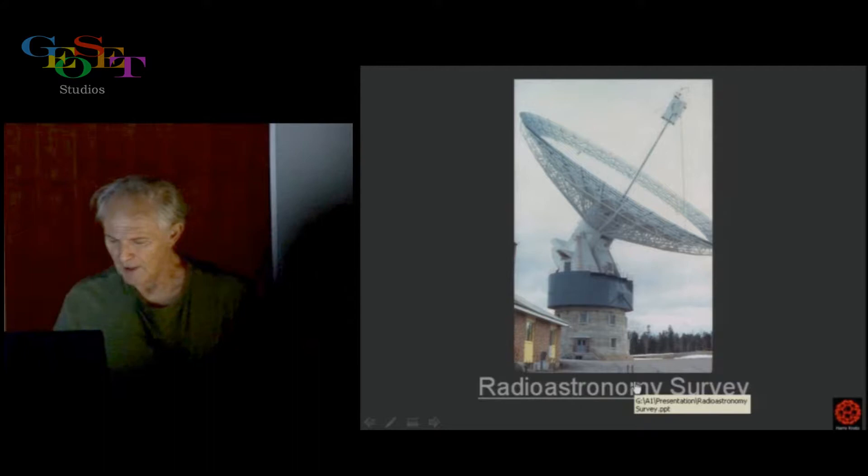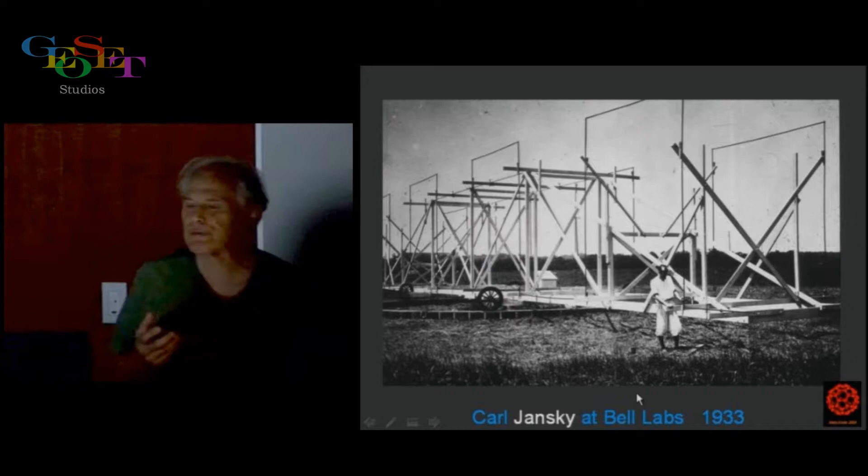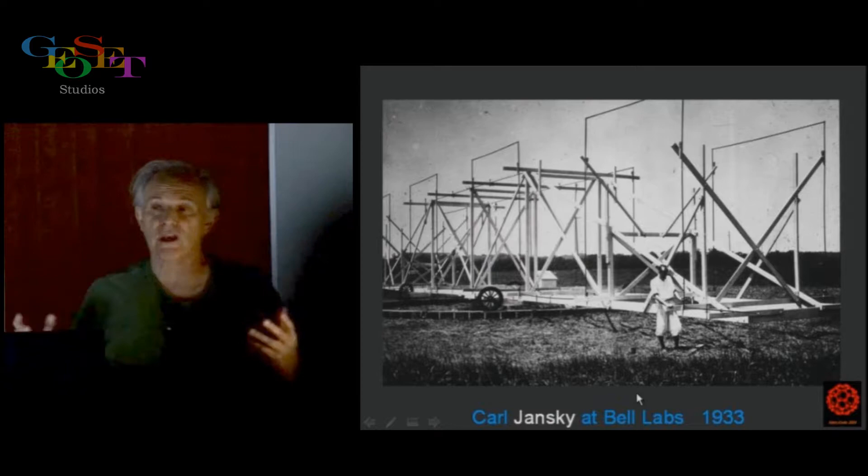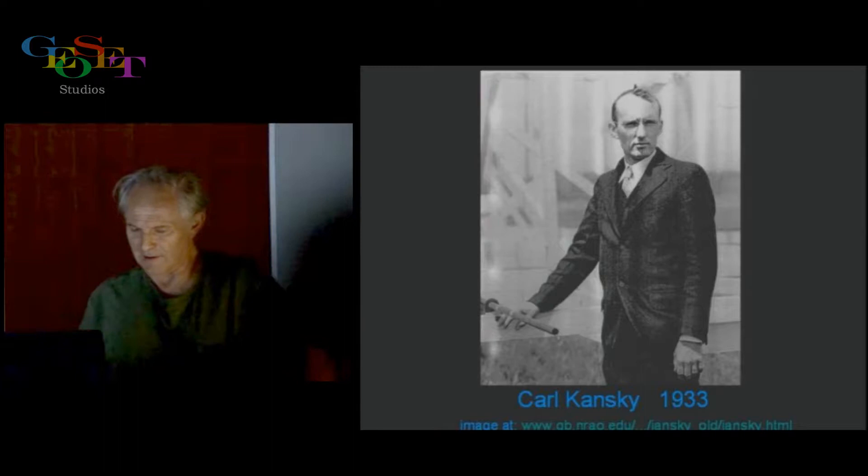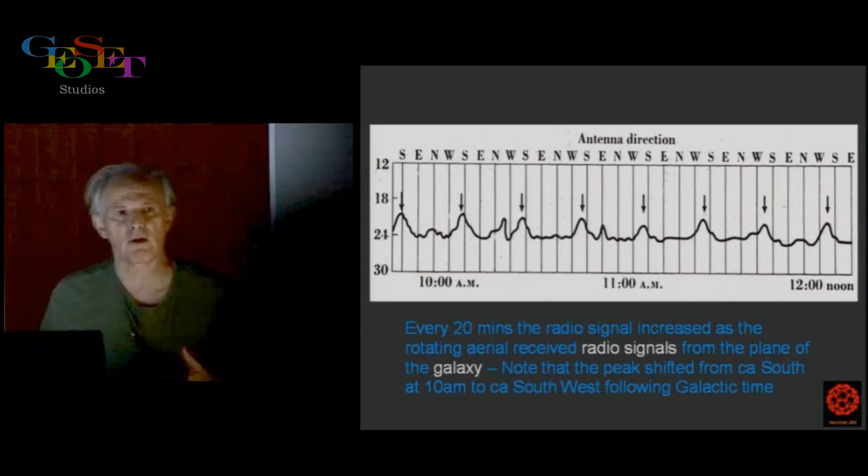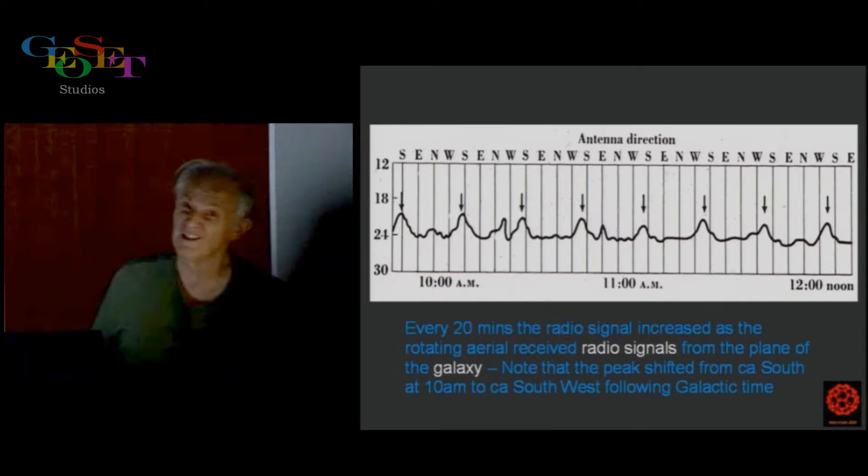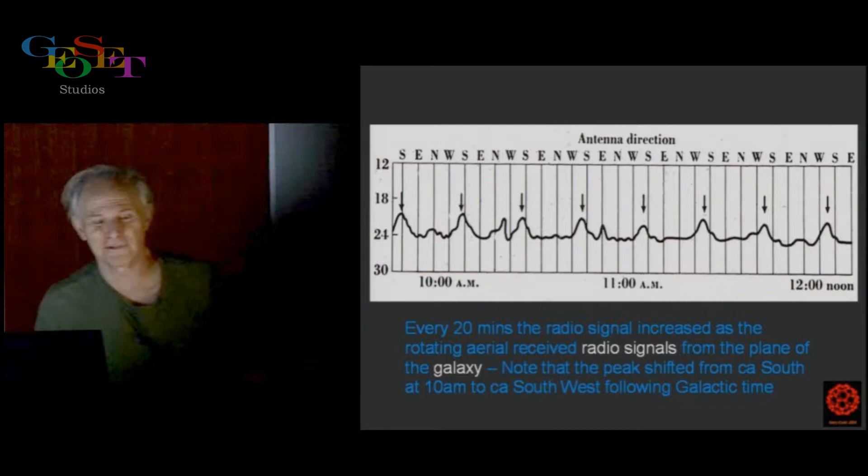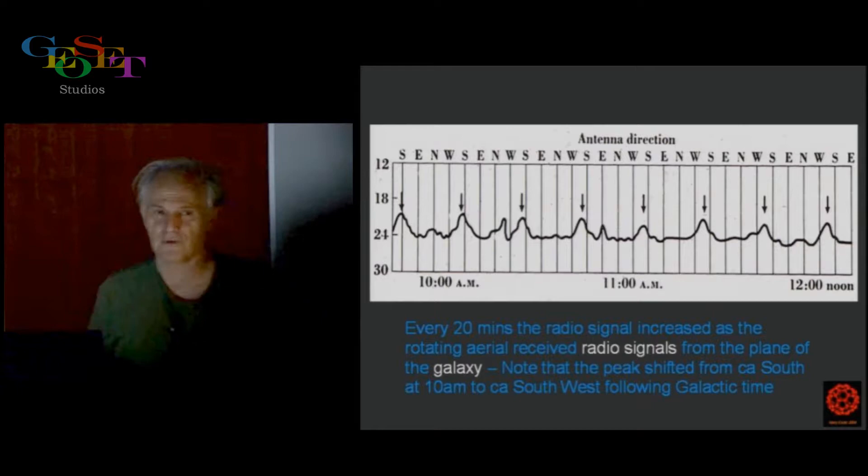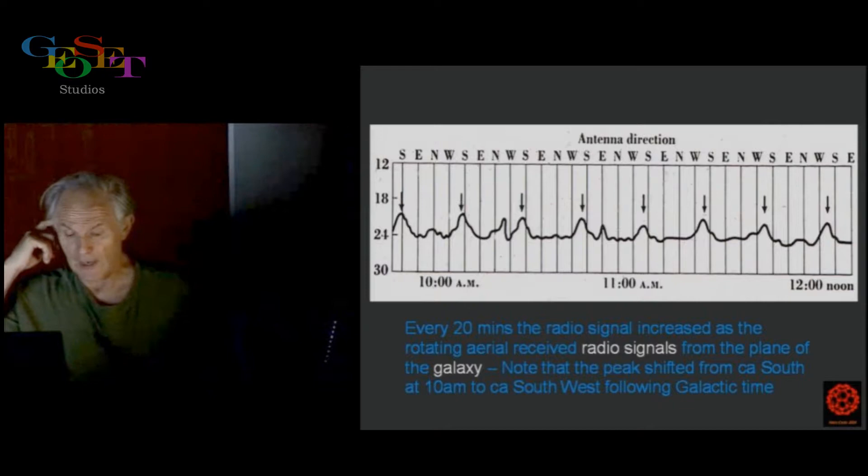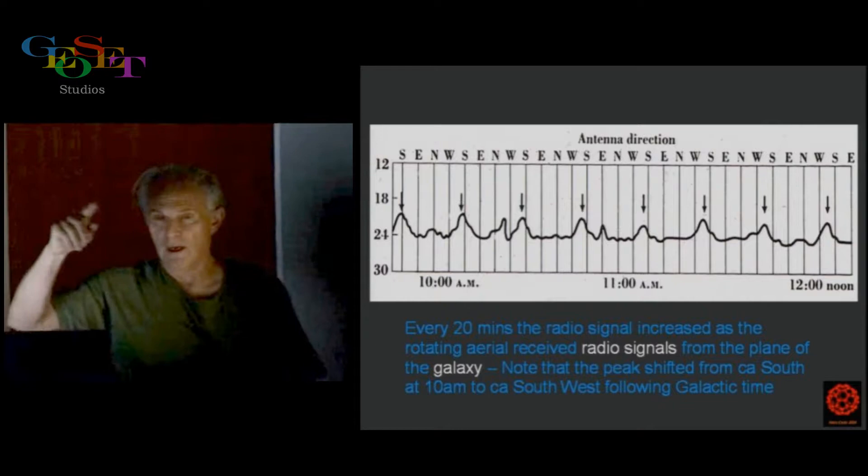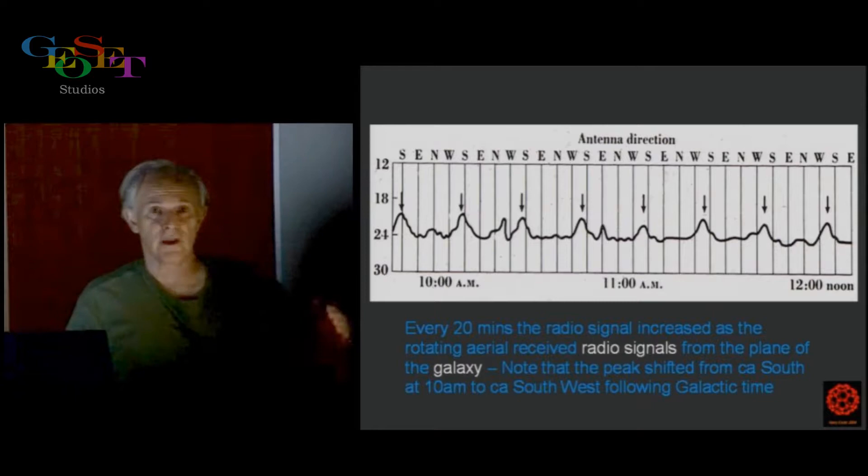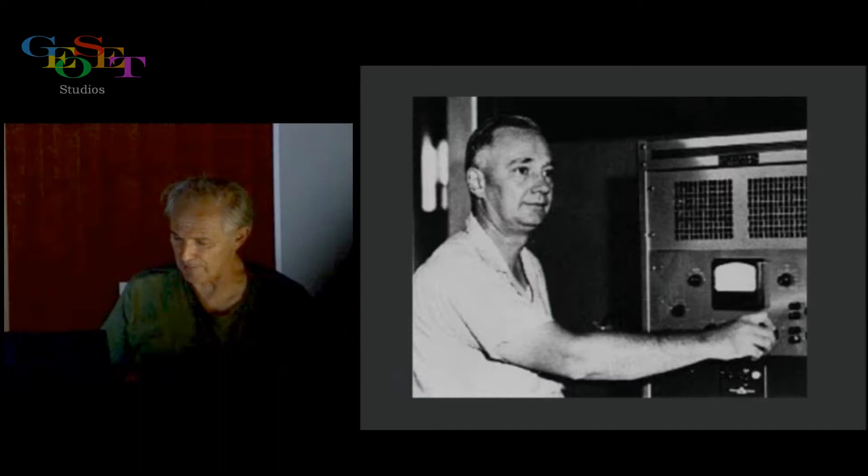Now, that was around the 1950s. In 1933, Karl Jansky, working at Bell Telephone Laboratories, built this aerial. This is a picture of him looking suitably like a general. He was the first person to detect radio signals from outside the earth. Bell Labs, Bell Telephone, as you probably know, used to be interested in communications. They were interested in finding out what was going on, where the radio signals were coming from. In this particular image, we see that as it rotated, the peak in the radio signal went up as it pointed along the galactic plane. It shifted with galactic time, so it was clearly coming from outside the galaxy.